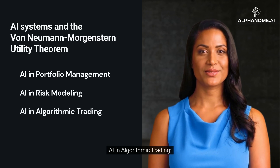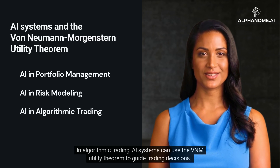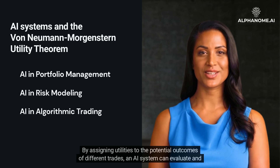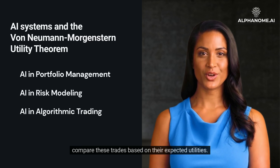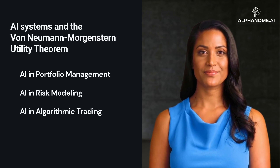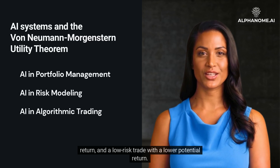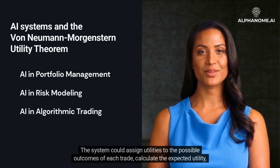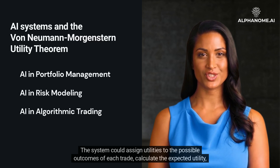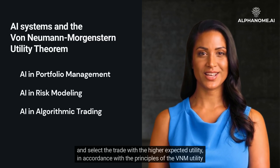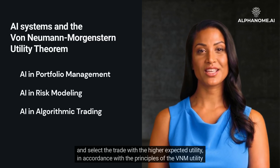AI in Algorithmic Trading: AI systems can use the VNM Utility Theorem to guide trading decisions by assigning utilities to the potential outcomes of different trades and evaluating them based on their expected utilities. For instance, if a system is considering a high-risk trade with high potential return versus a low-risk trade with a lower potential return, it can assign utilities to each trade's possible outcomes, calculate the expected utility, and select the trade with the higher expected utility.